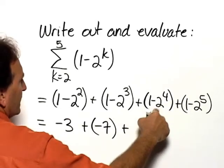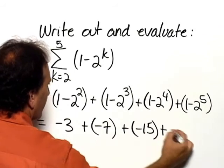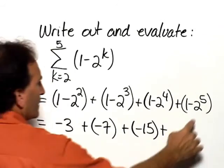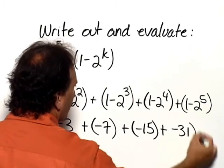Then we have plus, 2 to the 4th is 16, 1 minus 16 is negative 15. And then we have plus, 2 to the 5th is 32, 1 minus 32 is negative 31.